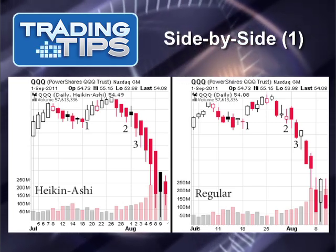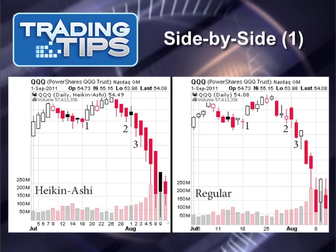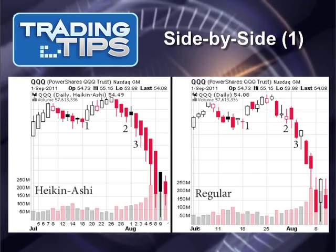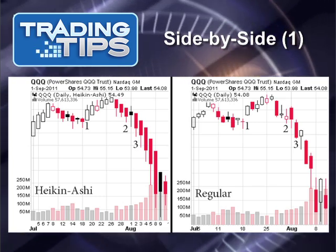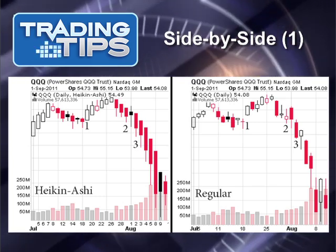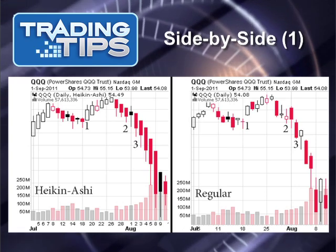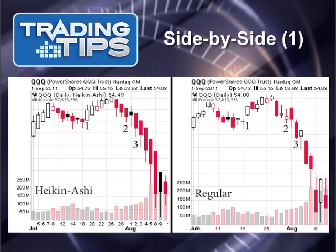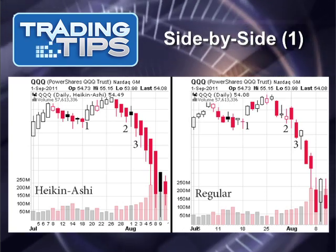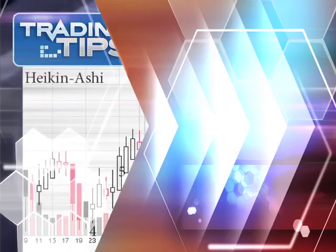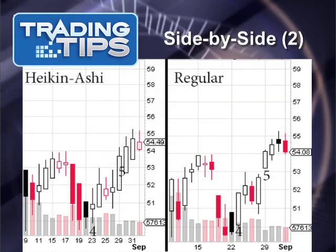Now look at point three. All around the third point on the Heikin-Ashi chart on the left, we have filled candlesticks without upper shadows — this is ultra bearish. Look at what the regular candlestick chart shows, which is not much.